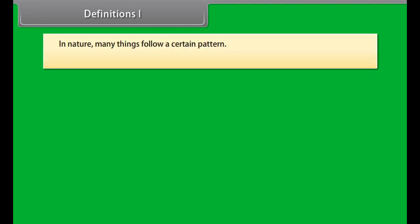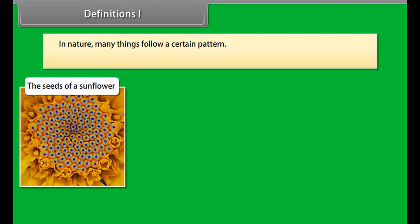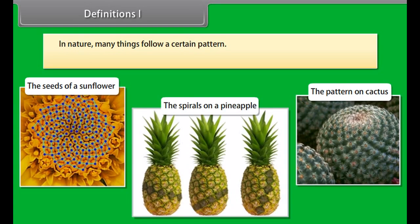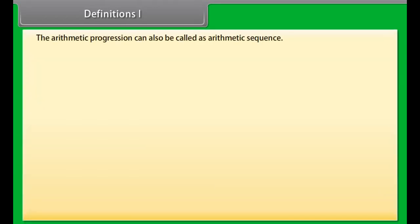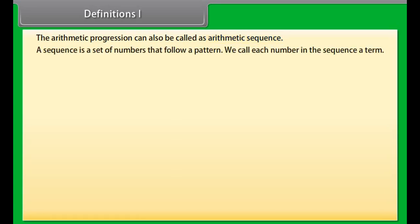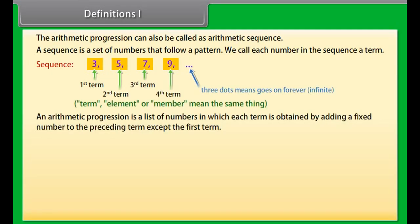In nature many things follow a certain pattern, such as the seeds of a sunflower, the spirals on a pineapple, the pattern on a cactus, and so on. Arithmetic progression is a study of one of such patterns. It can also be called an arithmetic sequence. A sequence is a set of numbers that follow a pattern, and we call each number in the sequence a term. An arithmetic progression is a list of numbers in which each term is obtained by adding a fixed number to the preceding term, except the first term.